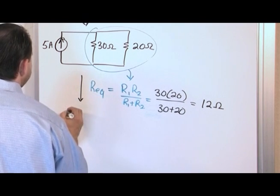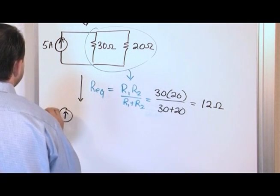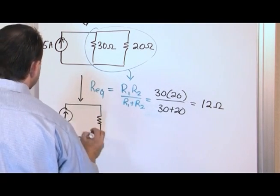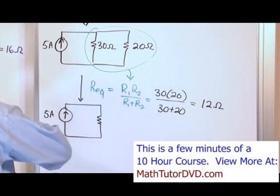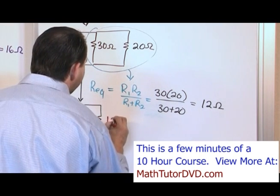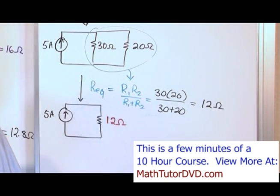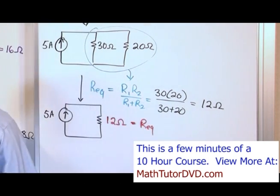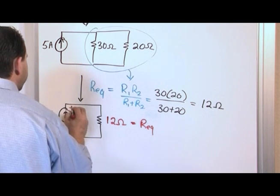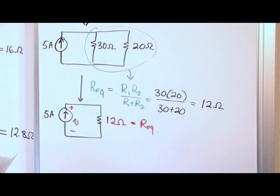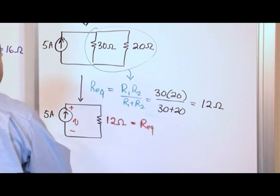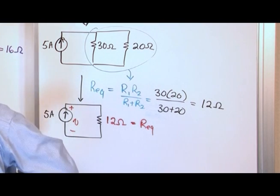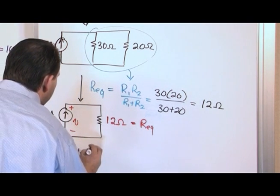So, just to make sure everybody's on the same page, we have a current source. It's 5 amps. And what we've figured out, basically, from all of this simplification, is that all of those resistors basically look exactly like a 12 ohm resistor. They look just like a 12 ohm resistor. And we'll just say that that's the equivalent resistance. And we know that there's a voltage across this source, and this is what we were trying to find. So, how do we do that? We have a known current. We have a known resistance.